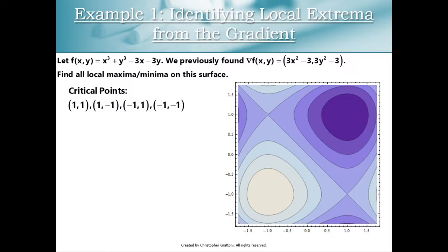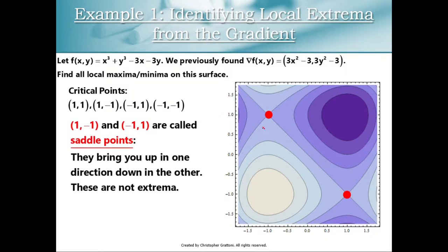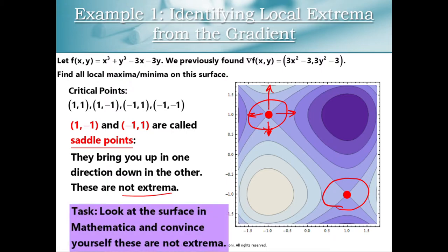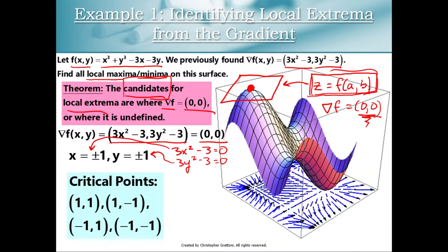So let's figure out how to classify these critical points. If you have technology at your fingertips, you could use plotting tools — a contour plot is pretty good. Some of these points are called saddle points because we go uphill in a pair of directions and downhill in others, so they are not extrema. They're interesting points, but not maximums or minimums.